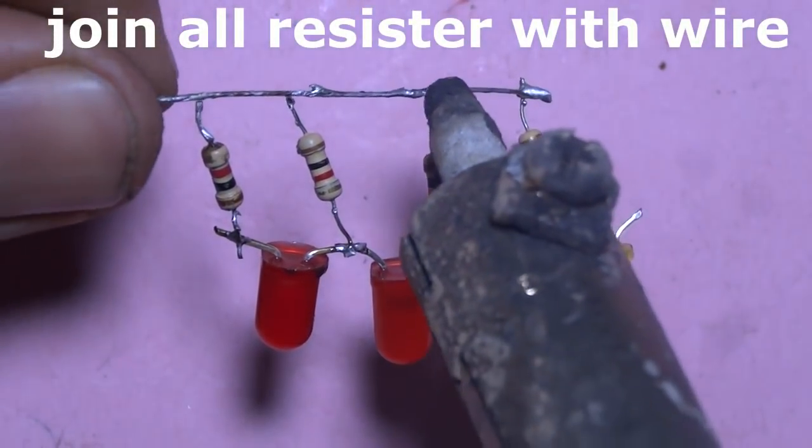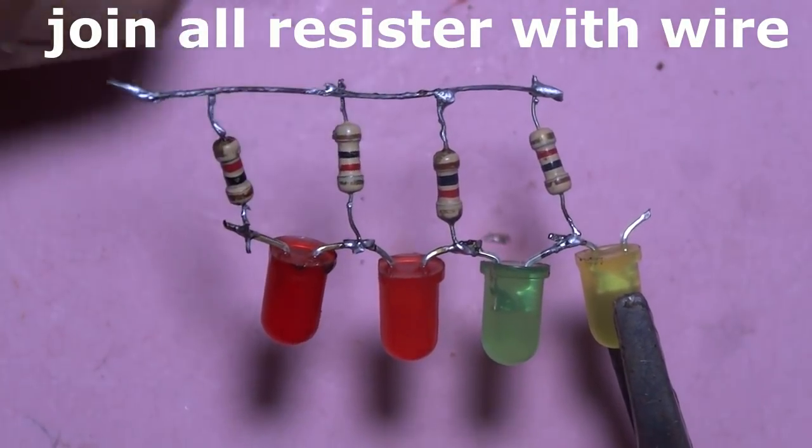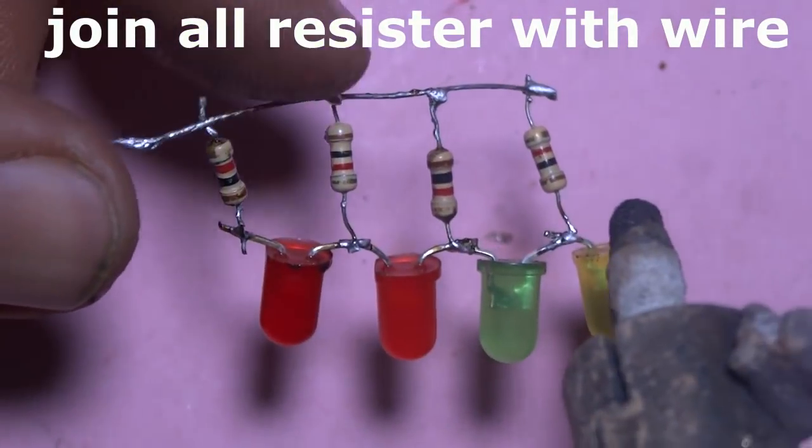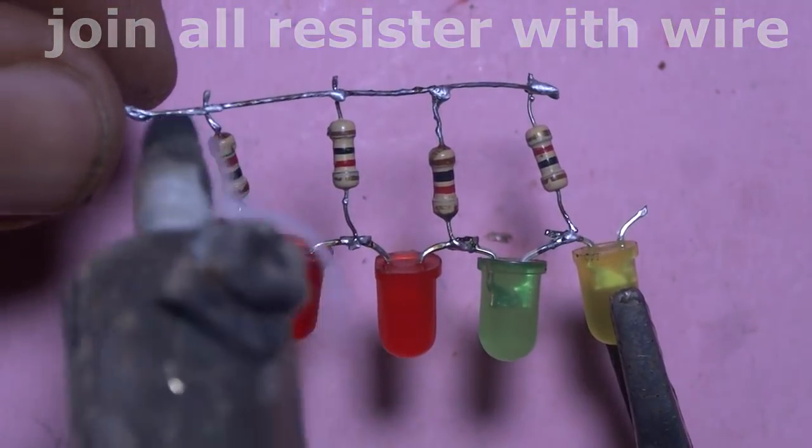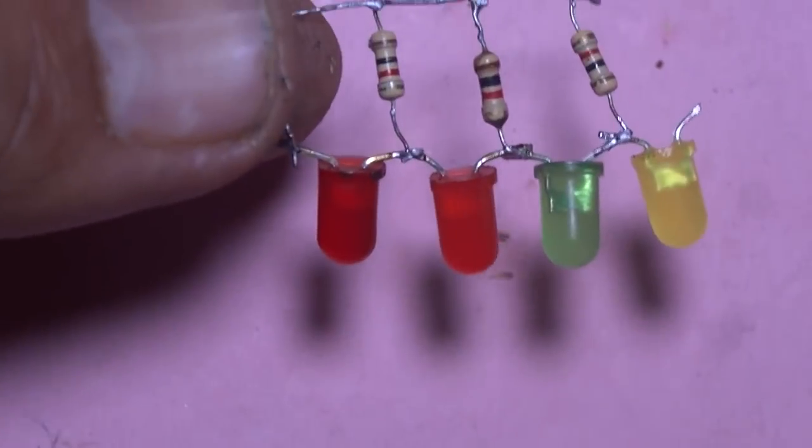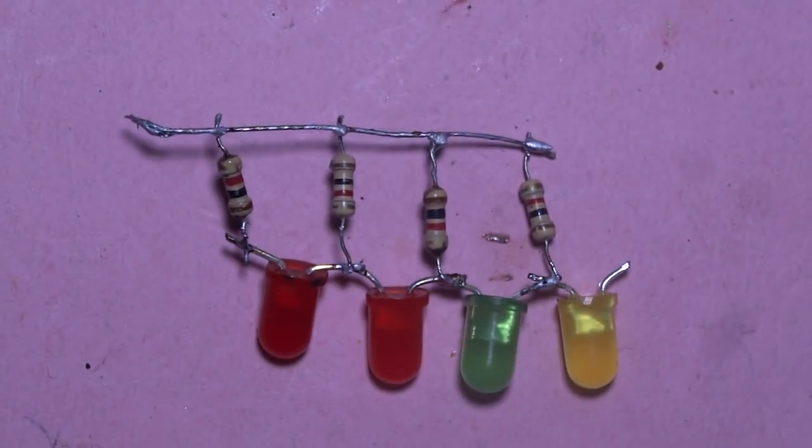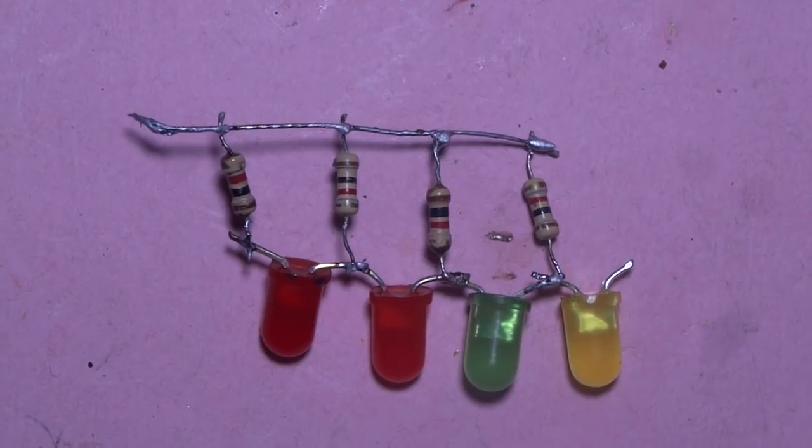Now we connect our wire with all second point of resistors. Our wire has been soldered also. It is negative point of the battery. Our circuit has been completed.